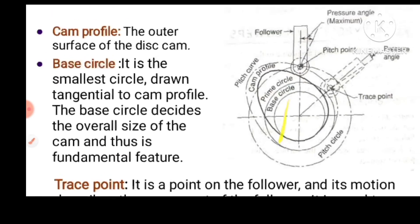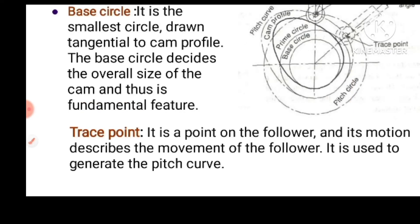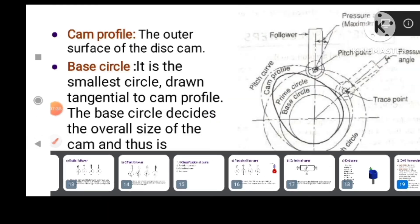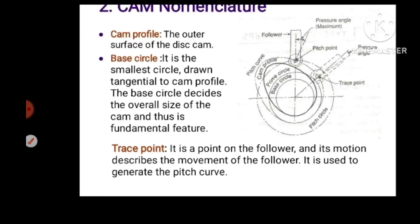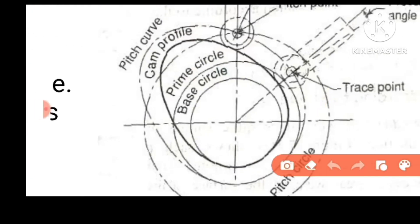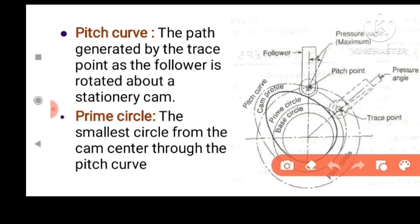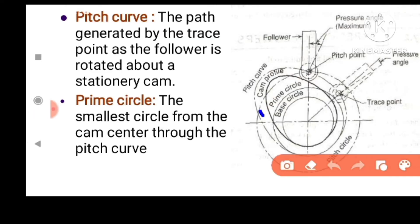The trace point — the trace point is from the area from the knife edge, here is the center of the trace point. The trace point is the point on the follower and its motion describes the motion of the follower. It is used to generate the pitch curve. For a roller follower, the center is the trace point. The pitch curve is generated by the trace point.